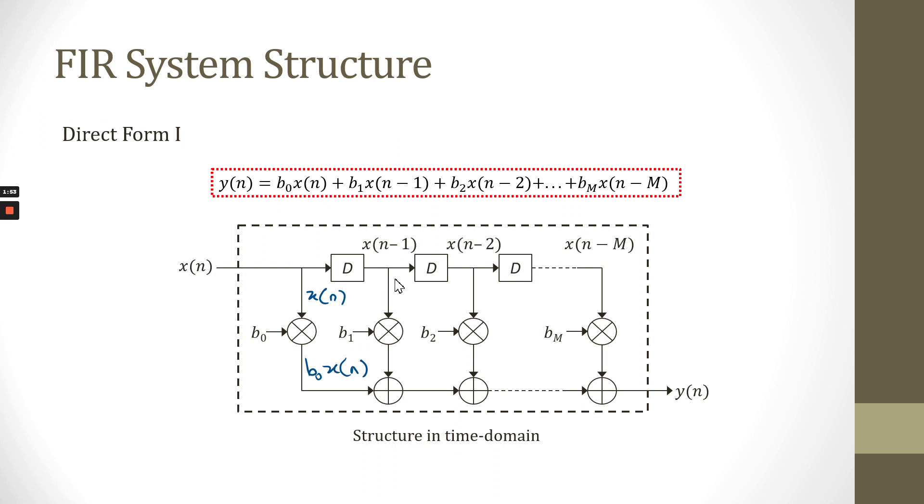For the second path, this is the past input x(n-1) after we apply this delay unit time to the current input. Multiply with this coefficient b1, it will produce b1 x(n-1). The third path is x(n-2) after we apply double delay unit time for the current input. Multiply with coefficient b2, it will produce b2 x(n-2) and so on. So, to produce this equation of y(n), it is equal to b0 x(n) plus b1 x(n-1) plus b2 x(n-2) plus bM x(n-M).